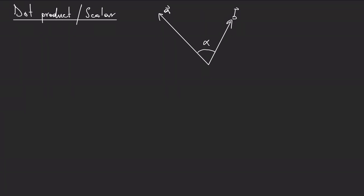The definition of the dot product is as follows. The dot product between vector A and vector B — notice the dot here, because the thing on the left is a vector and the thing on the right is a vector. This should trigger that we are not performing a regular multiplication; these are not numbers but vectors. The dot product is computed by taking the magnitude of the first vector A and multiplying it by the magnitude of the second vector B.